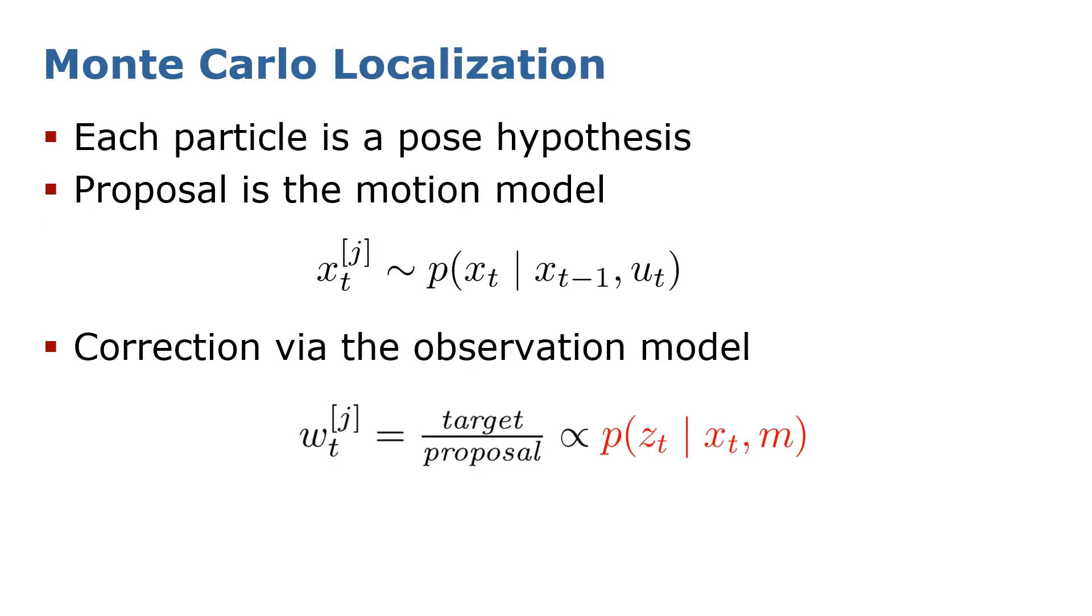Monte Carlo localization basically has two steps. It first uses a motion model with particles to represent hypotheses of the robot position. The second step is to use an observation model to update the weights of particles.